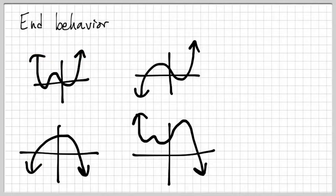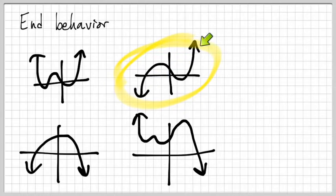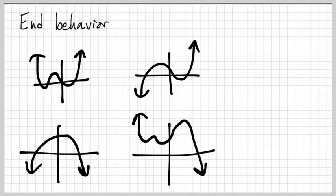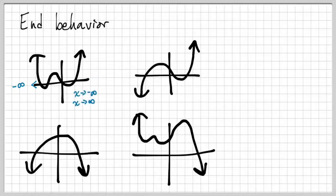Call your attention to this one. On the left side of the graph, where is the arrow pointing? On the left side, we are pointing down. On the right side of the graph, we are pointing up. Now, the academic way of describing end behavior: instead of saying 'the left side of the graph,' we say 'as x approaches negative infinity,' because on the left side the x's are going to negative infinity. For the right side, we say 'as x approaches positive infinity.'